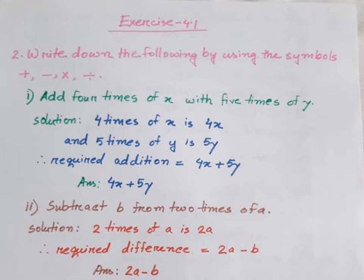Number 2: Subtract b from 2 times of a. Solution: 2 times of a is 2a. We have to subtract b from 2a. So the required difference is equal to 2a minus b. According to the question, we have subtracted b from 2a. The answer is 2a minus b.